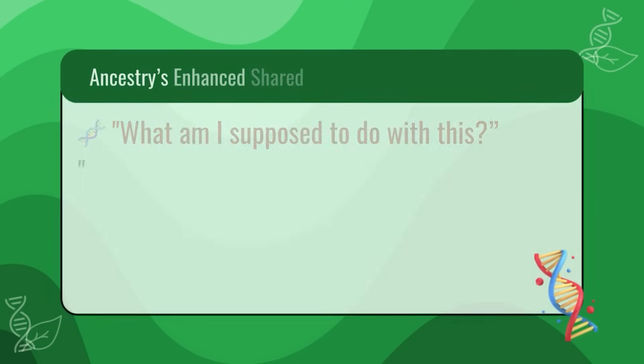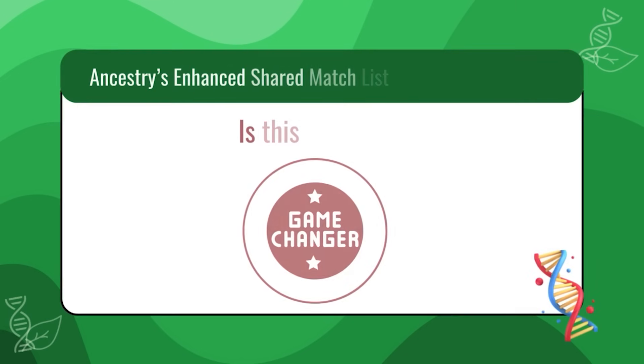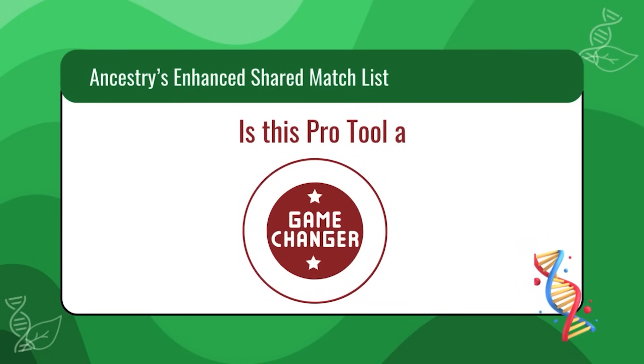Ancestry released the pro tool called Enhanced Shared Match List and I've been getting the same questions over and over: What am I supposed to do with this? Is this actually different from regular shared matches? Can it help me figure out where my mystery cousin fits? And maybe the biggest question of all, is this tool a game changer or is it just another shiny button that doesn't really change the way we build our family trees? In this video, I will explain what the Enhanced Shared Match List does, how it differs from the previous one, and most importantly, how you can apply it to your real life DNA mysteries.